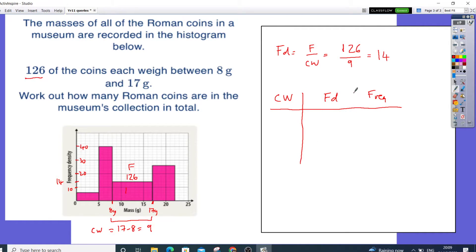Just going to take it along here. So the first one is from 5 to 0. So that's going to be 5. And the frequency there is going to be 2, 4, 6. Frequency density, sorry, it's going to be 6.